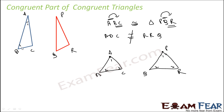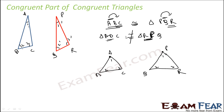The angles also correspond: angle 1 equals angle 1', angle 2 equals angle 2', and angle 3 equals angle 3'. This is a very critical concept. You cannot say triangle ABC is congruent to triangle RPQ, because that would imply AB equals RP, which may not be true. Congruency must follow the same order: AB equals PQ, AC equals PR, and BC equals QR.